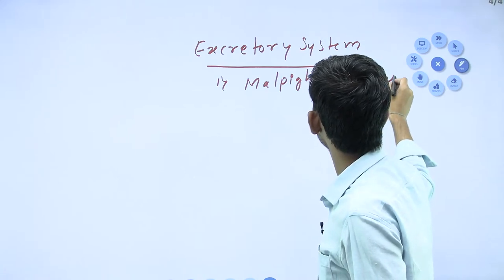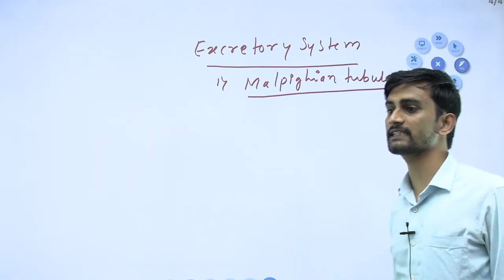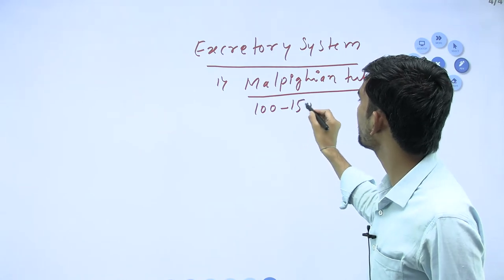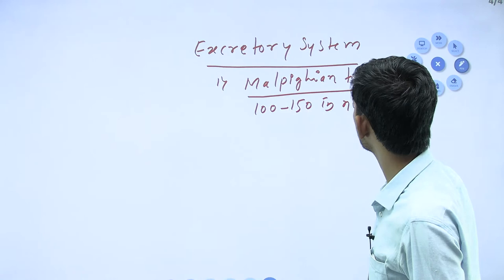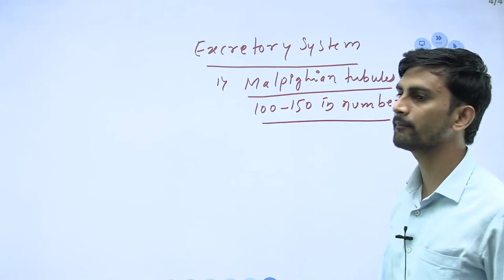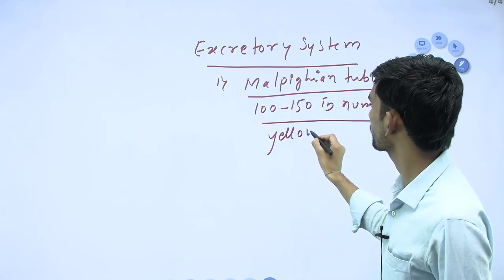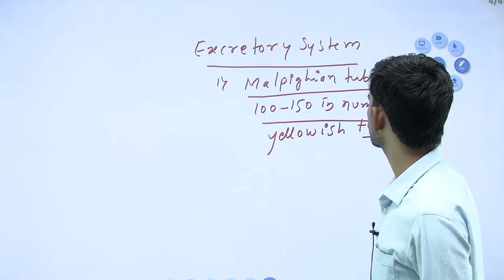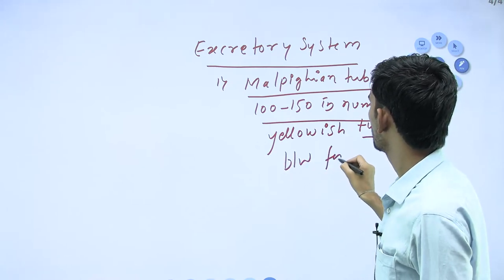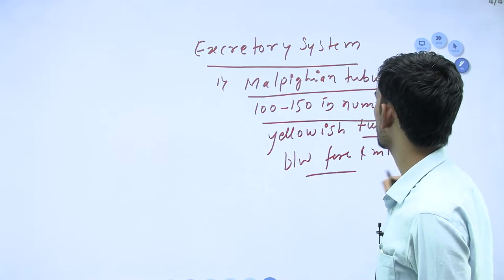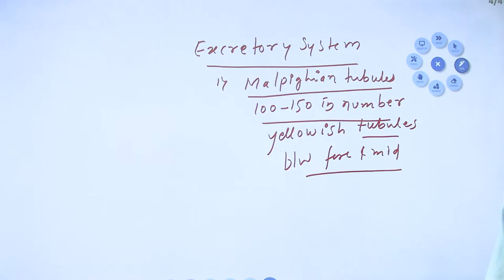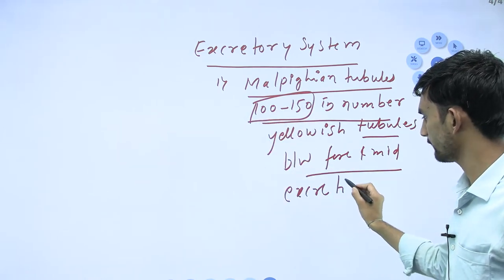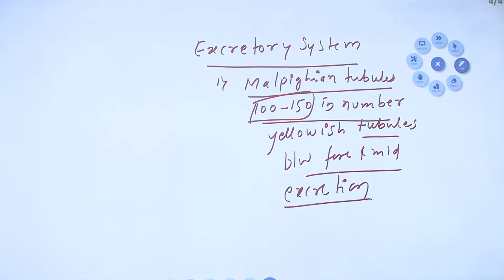The Malpighian tubules are 100 to 150 in number - this number is very important. They are yellowish tubular structures found between the foregut and midgut. These structures perform excretion - that is, removal of metabolic waste material.